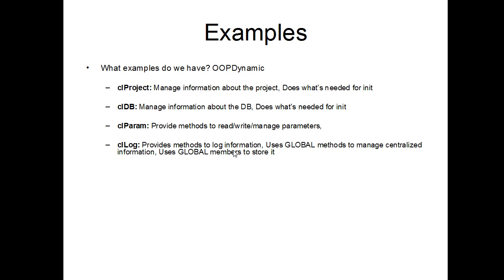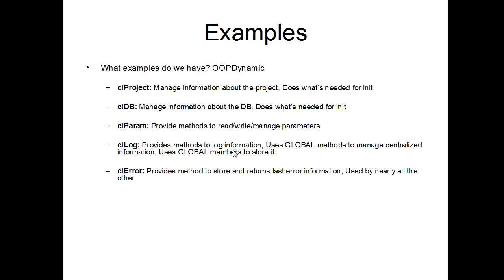There is also a CLLog class, and it provides methods to log information — I'm using it to debug specific cases and all that. And here you're going to see for the first time a word we'll talk about in detail later: it's called global. It's the example we'll use today to see what we can do with centralized information and global members. There's also a CLError class that I'm using to manage errors appearing in the code — it can be a HyperFile error or anything else. It's a centralized system to store information about errors, get it back, display it, and all that.